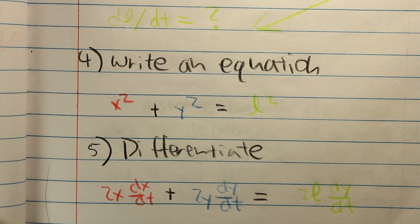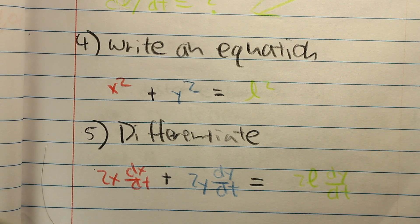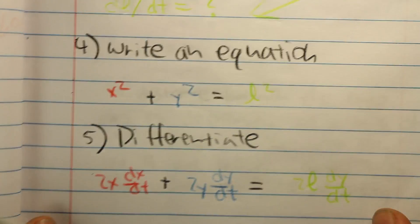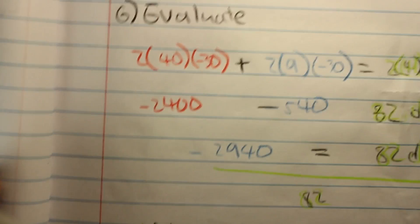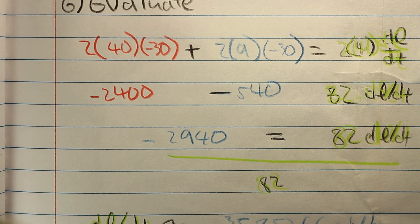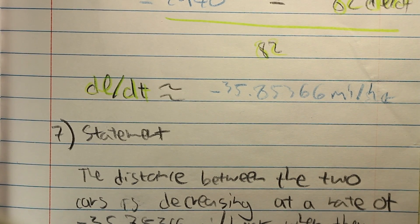Step four is to write an equation that represents and solves the problem. The equation alone cannot solve the problem, so we need to differentiate it using derivative rules. Differentiating gives us: 2x(dx/dt) + 2y(dy/dt) = 2L(dL/dt). Once you have the differentiated equation, substitute all the known information in. In doing so, you find that the distance between the two cars is changing at approximately negative 35.86 miles per hour.